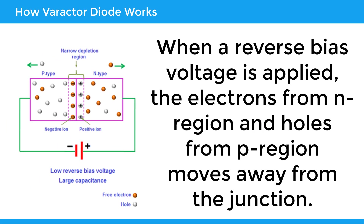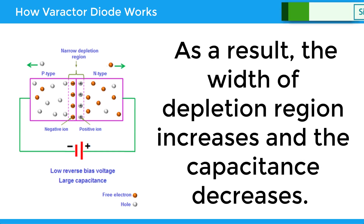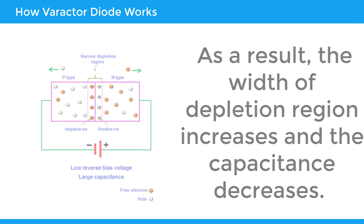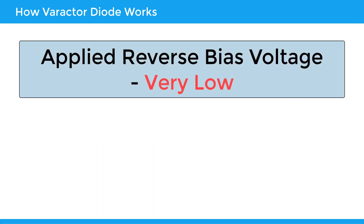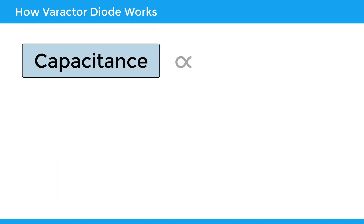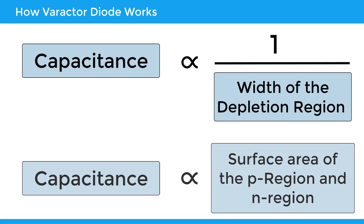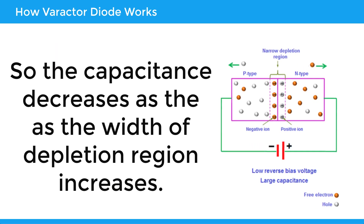When a reverse bias voltage is applied, the electrons from the N region and holes from the P region move away from the junction. As a result, the width of the depletion region increases and the capacitance decreases. However, if the applied reverse bias voltage is very low, the capacitance will be very large. The capacitance is inversely proportional to the width of the depletion region and directly proportional to the surface area of the P region and N region. So, the capacitance decreases as the width of the depletion region increases.